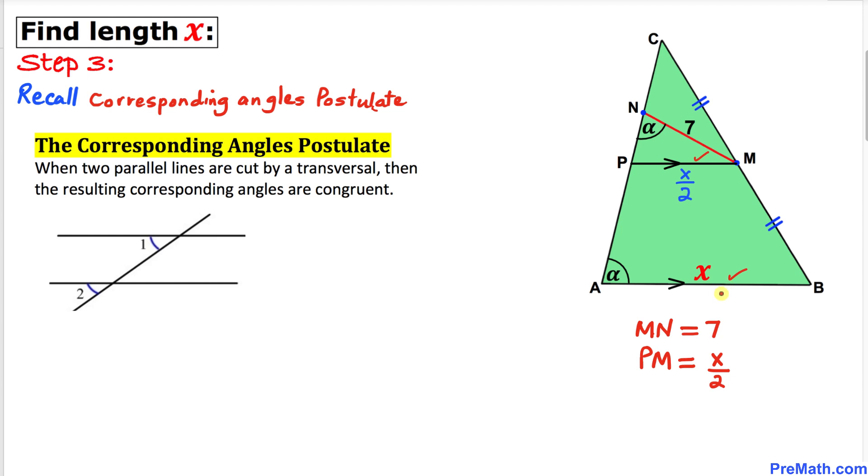They are being cut by this transversal AC. Then we can see that this angle A, which is alpha, is congruent to this angle MPN. So if this angle is alpha, then this angle has to be alpha as well.